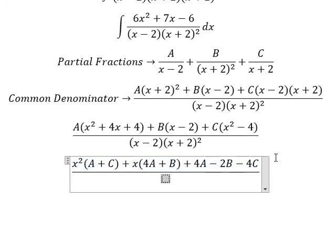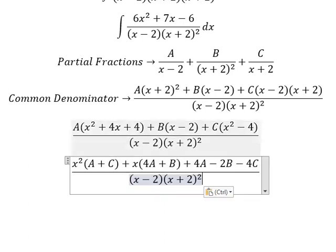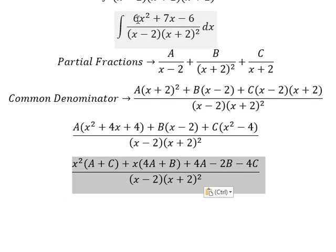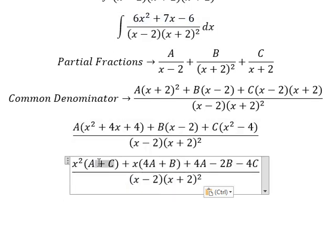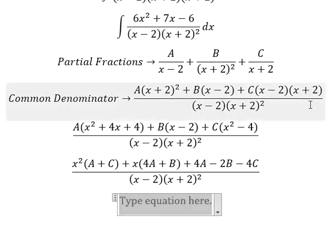With the same common denominator, for x squared we see the coefficient is 6, so A plus C equals 6. For x we have 7, so 4A plus B equals 7. The constant term equals negative 6. Now we create the system of equations.